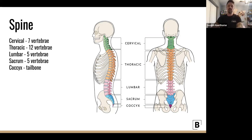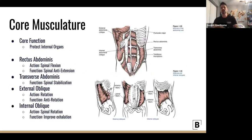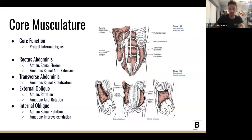Below the ribs, muscle is the only real thing surrounding those organs to keep them in place — and that allows us to move as effectively as possible. Our core musculature's main job is to protect internal organs. Yes, heavy lifts still benefit from core training for lumbar stabilization. But if a client wants to focus only on core, we also want them picking up something heavy to do what core is meant to do.